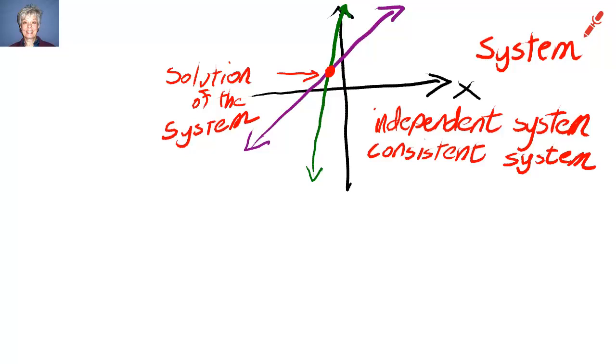All right, so we have the solution of a system. We have an independent system. And we have a consistent system. And that is one type of linear system. Linear means line. And this is a system of lines.